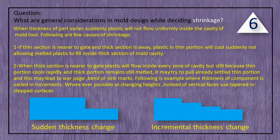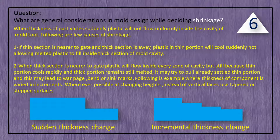When the thick section is nearer to the gate, plastic will flow inside every zone of the cavity, but still, because the thin portion cools rapidly and the thick portion remains melted, it may try to pull the already settled thin portion, and this may lead to warpage, bending, and sink marks. Following is an example where thickness of the component is varied in increments. Wherever possible, at changing heights, instead of vertical faces, use tapered or stepped surfaces.